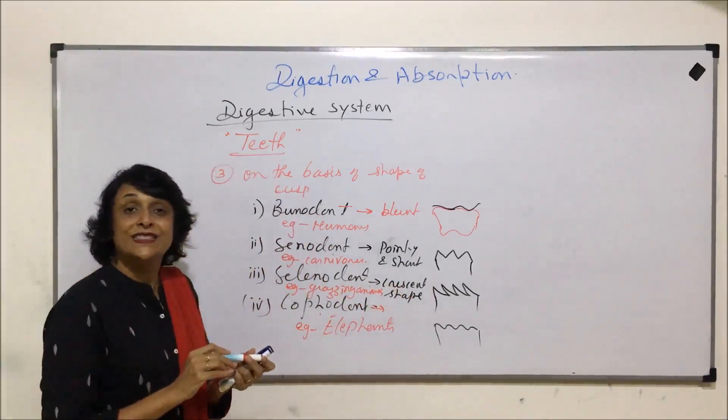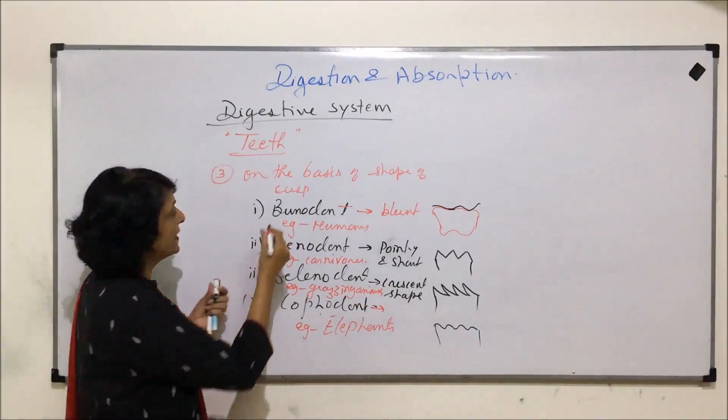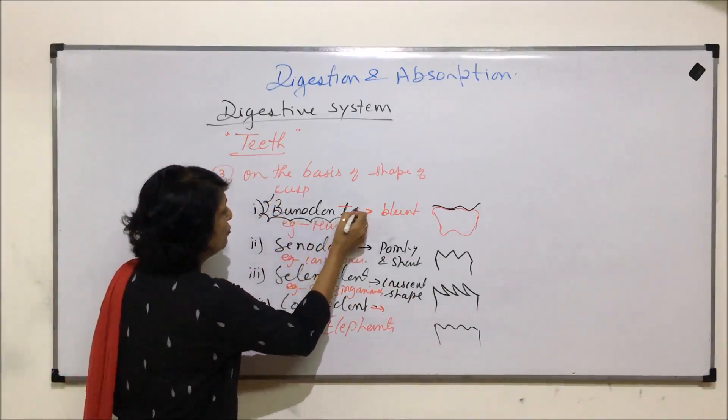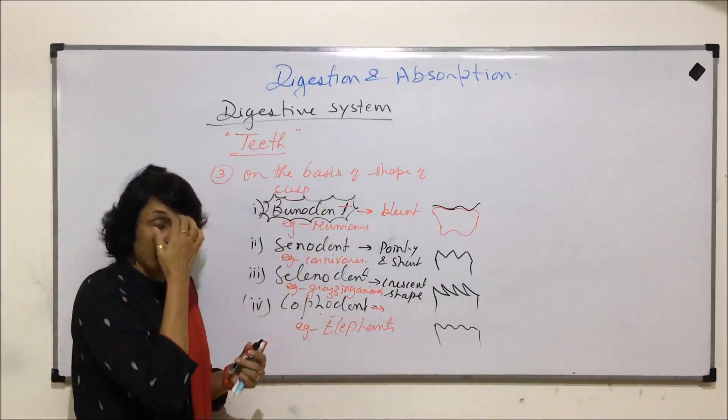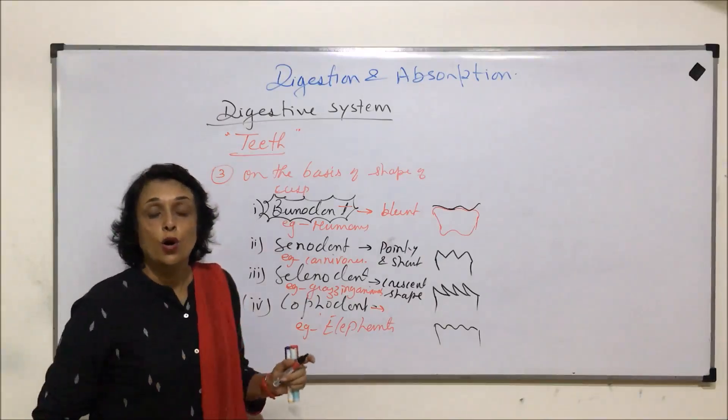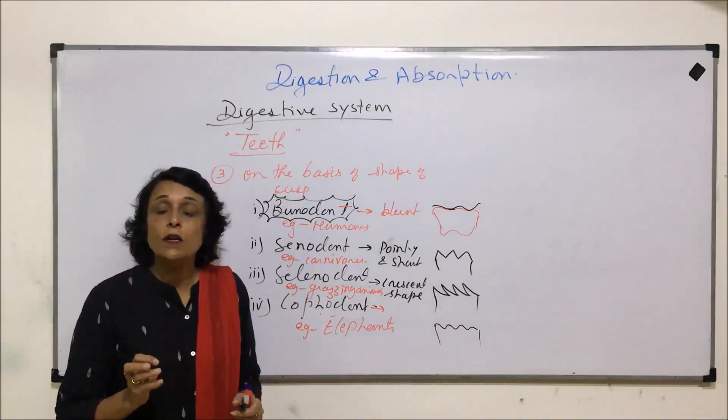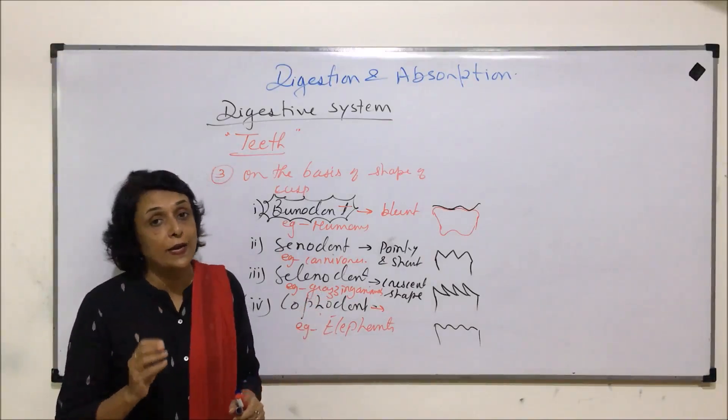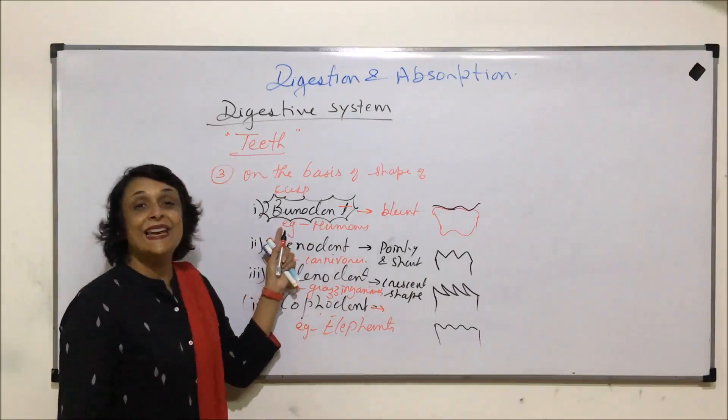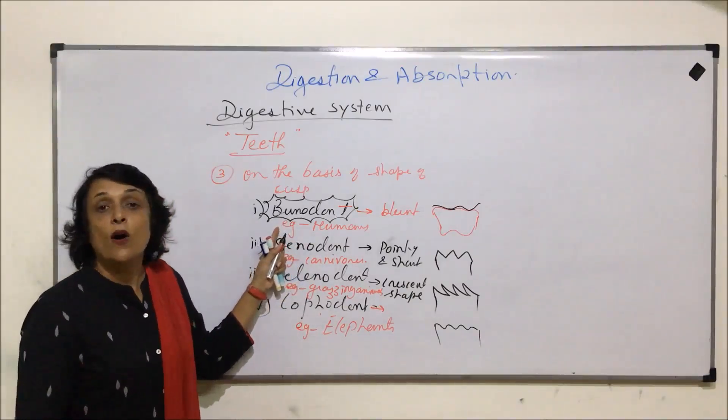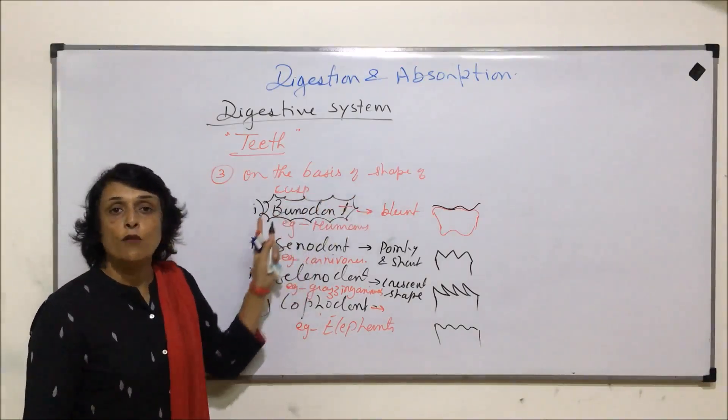Out of this, we come in the category of bunodont. Now, the classification which we saw earlier was on the basis of sets and the shape. This is the next category, that is, on the basis of the shape of the cusp.